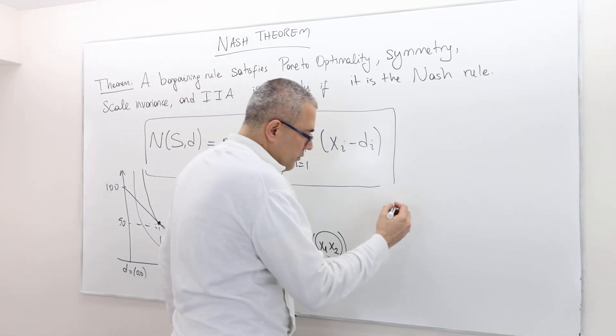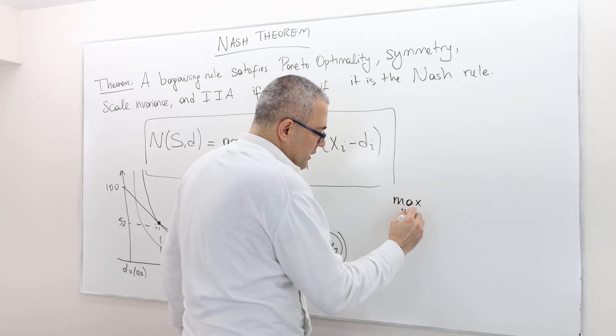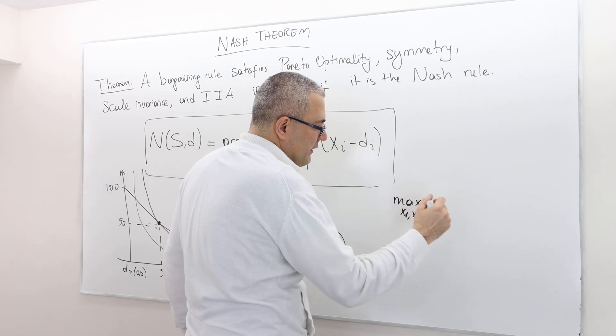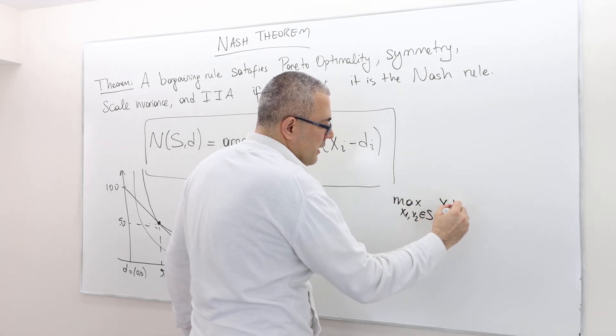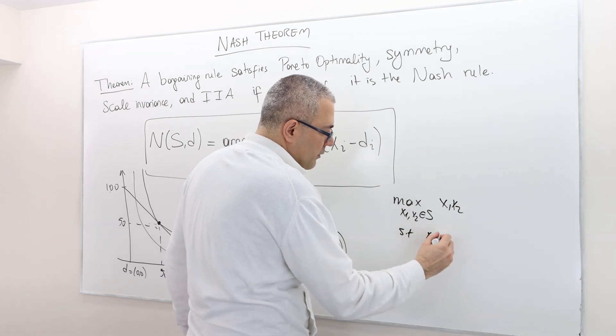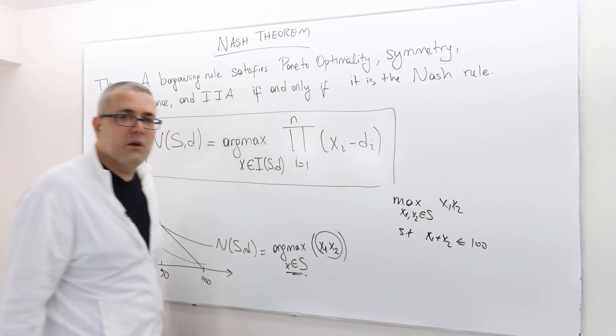the X that maximizes this, is this point where its slope is exactly equal to the slope of the X1 plus X2 equals 100 line. So if you solve this, it's basically the solution is going to be maximized by choosing X1, X2 in this set S, maximize X1 times X2, subject to X1 plus X2 less than or equal to 100.